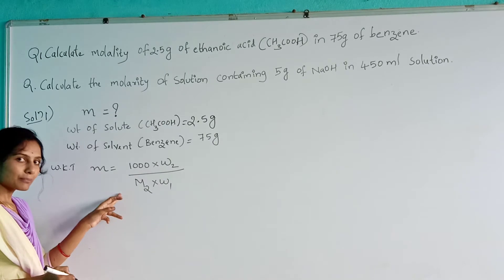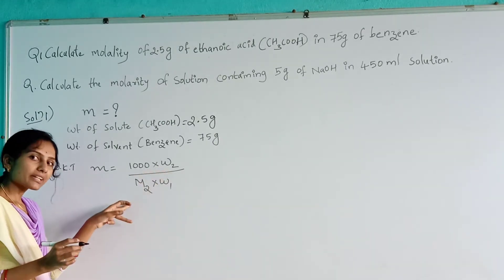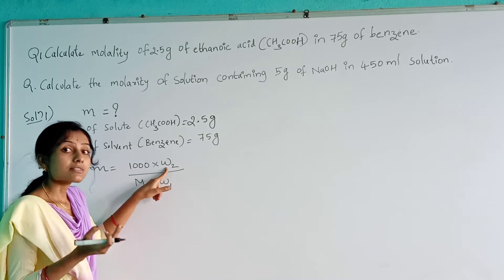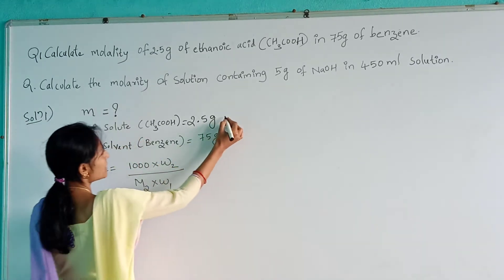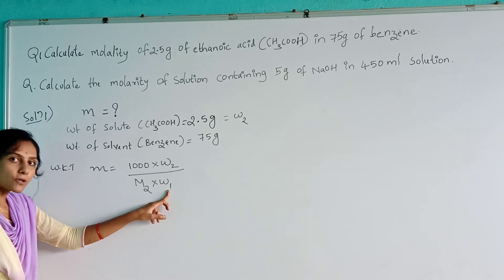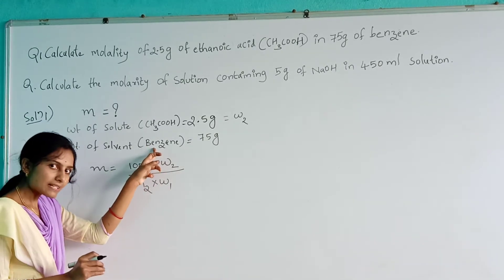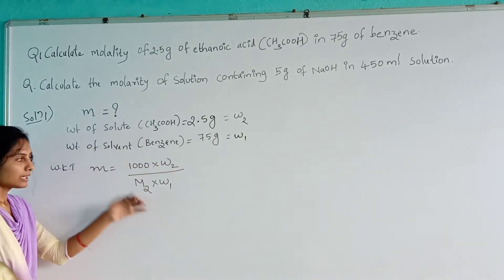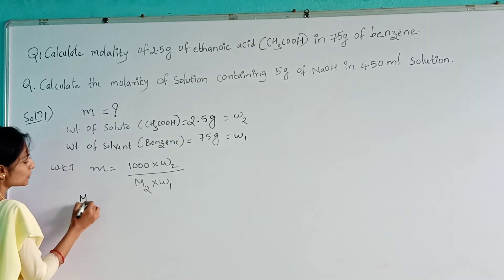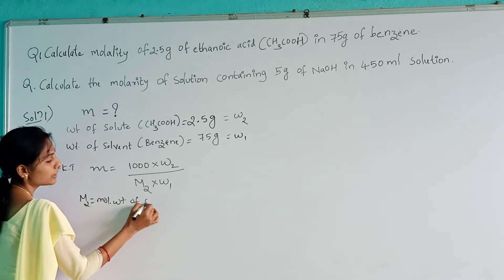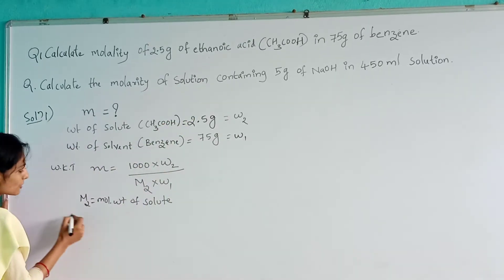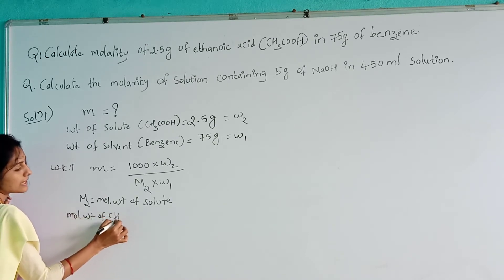What is W₂? Here, subscript 2 refers to solute and subscript 1 refers to solvent. So W₂ is the weight of solute taken — that is ethanoic acid, which is our W₂. And the solvent, benzene, will be our W₁. What is M₂? M₂ refers to the molecular weight of the solute — subscript 2 means solute. So we need the molecular weight of ethanoic acid, which we will now calculate.